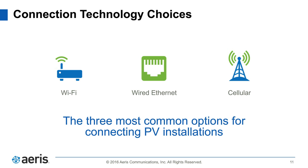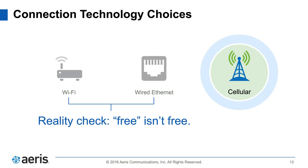When making your connectivity choice, you really want to consider three main factors. One, which solution gives you the fastest and simplest installation. Two, which solution has the highest reliability. And three, which solution delivers the lowest total cost. While Wi-Fi networks are largely available in and around houses and buildings, they introduce unnecessary installation costs and are subject to external forces that can and ultimately will interrupt service — for example, a homeowner changing Internet providers. Ethernet is typically a very reliable connection but comes with difficult installation processes that can be very time-consuming. And while the initial reaction is to assume that cellular comes with a subscription fee and Wi-Fi and Ethernet are free, it's not actually the case.